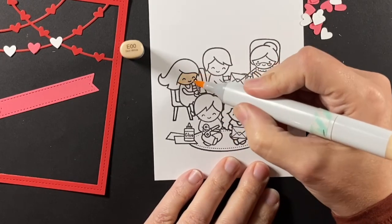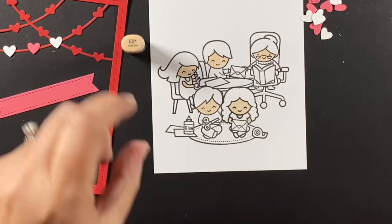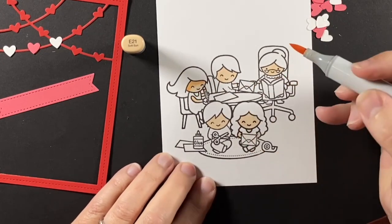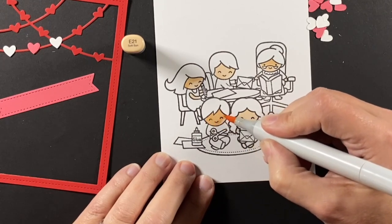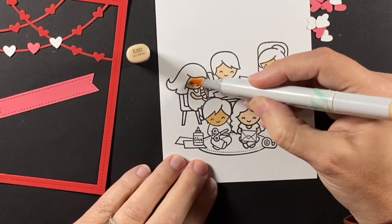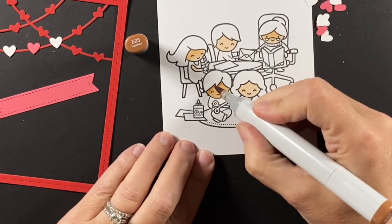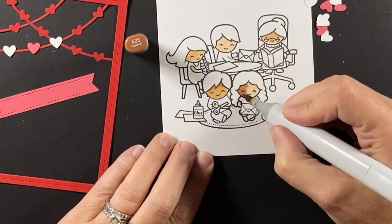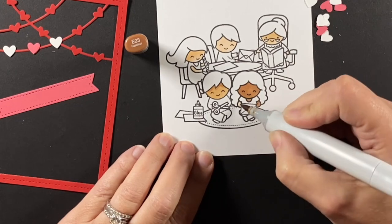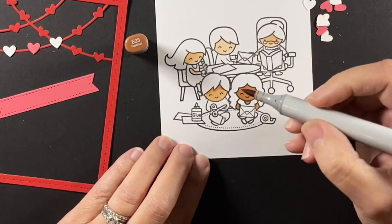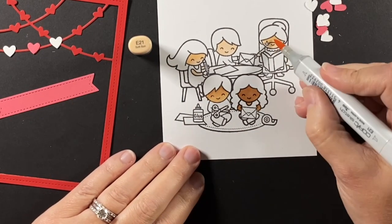I'm going to color everybody up and focus today on hair and skin. I started with a base of E00 on everyone just so I could find all the skin areas. I'm mostly using E20s, so all a variety of the 20s.